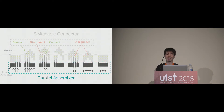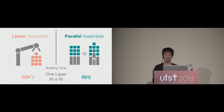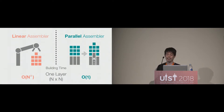The second key component is the parallel assembler, which enables instant shape formation. A traditional 3D printer like FDM uses a linear printing method that can only construct one point at a time. When assembling one layer of n-by-n size objects, a linear assembly method takes O(n²) time. Alternatively, a parallel assembly method can create an entire layer at once, taking only O(1) time per layer, which significantly reduces printing time.